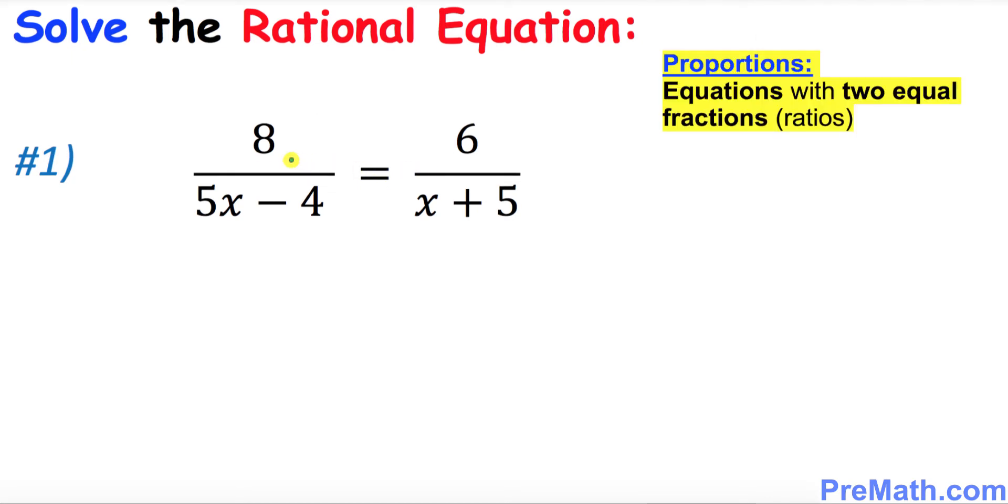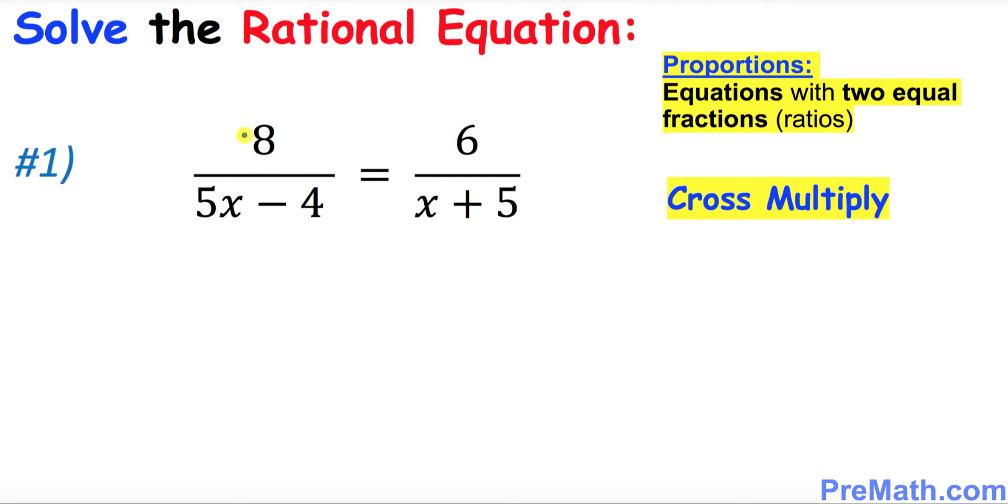This kind of equation is called a proportion. Proportion means that we have two fractions with an equal sign. Let's get started. In order to solve this equation, we are going to cross multiply, crisscross this way and this way.